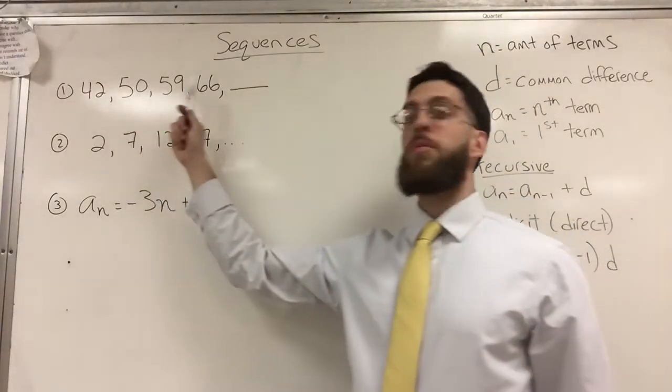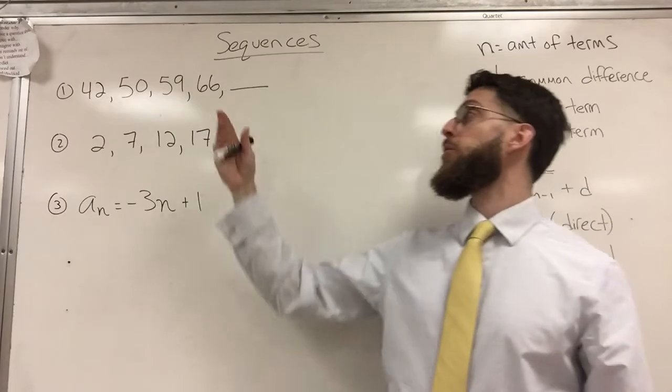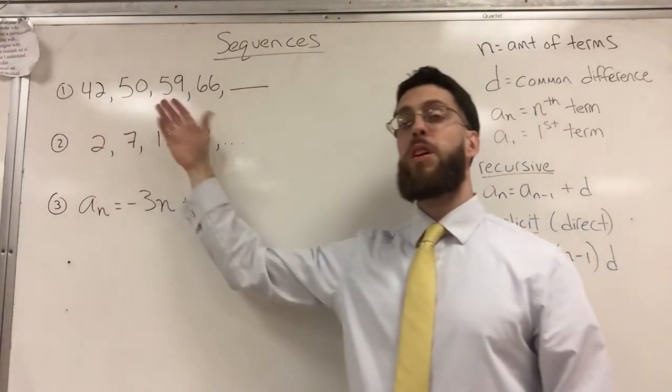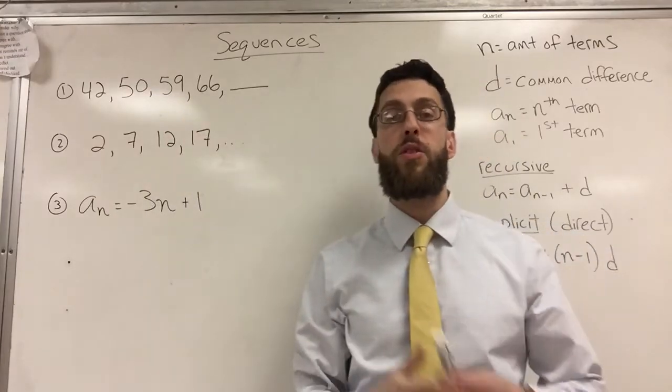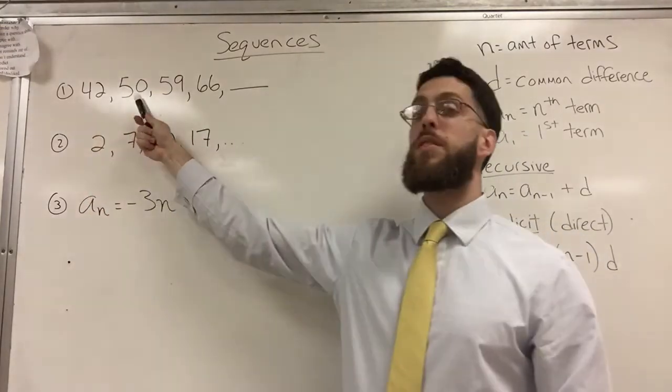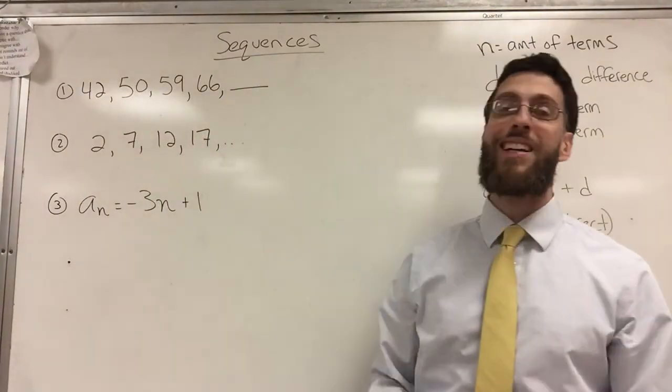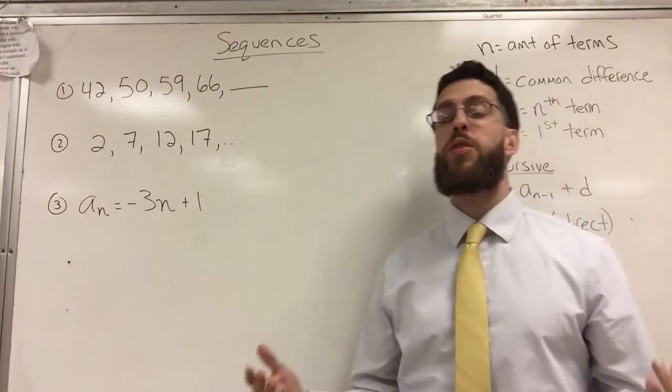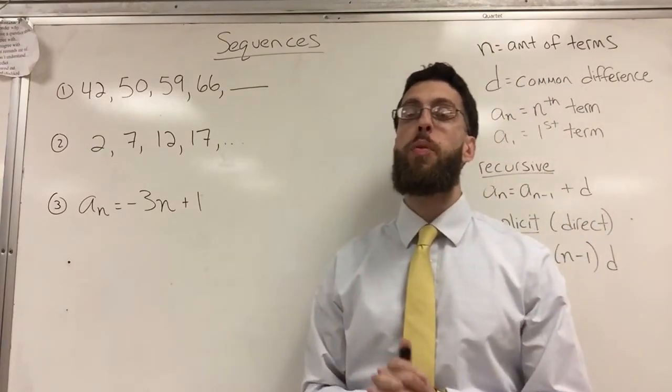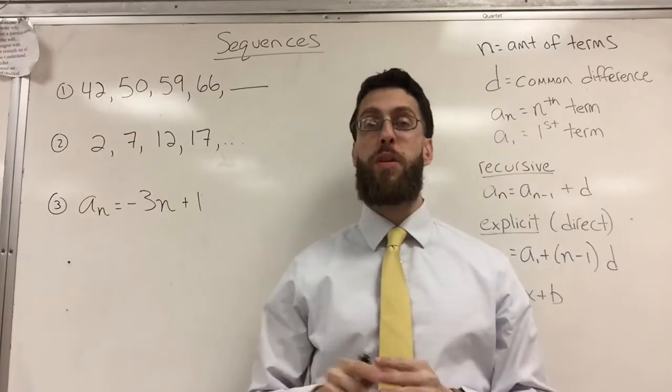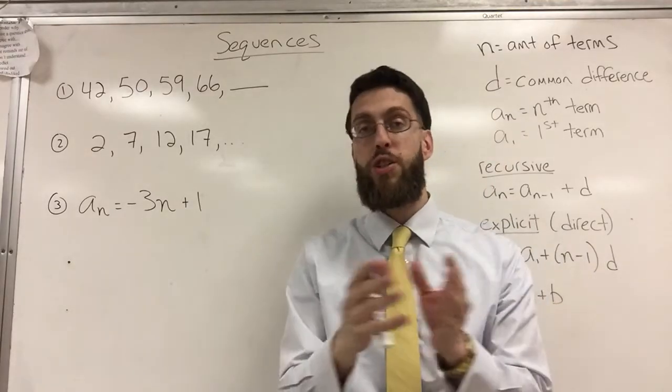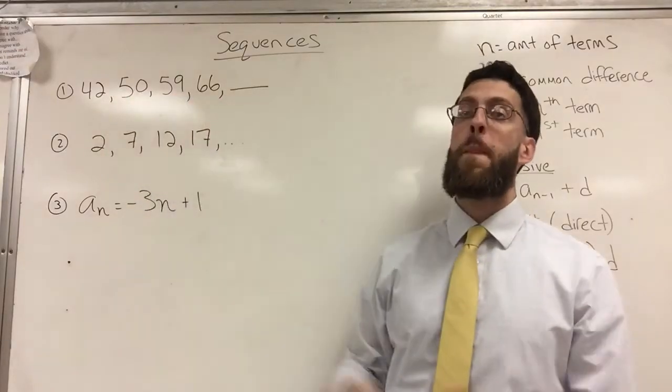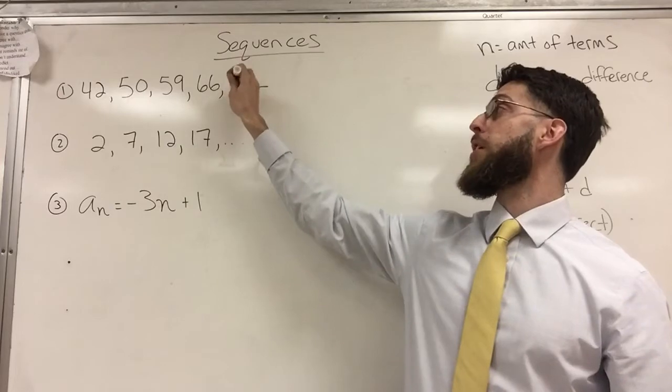Here I have some numbers in a row, and I would like you to fill in the next term, the missing term. First thing I want to do is try to establish a pattern. From 42 to 50 is 8, from 50 to 59 is 9, that's already not a constant pattern. 59 to 66 is 7, so there's no pattern. It was actually a trick question.